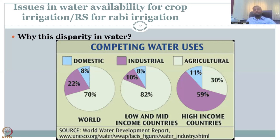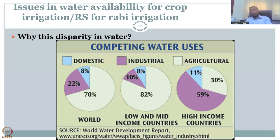In high-income countries, there is more profit in dollars per litre of water, whereas in developing nations — such as Nepal, Sri Lanka, and India — a lot of water goes into agriculture. There is a disparity, and more pressure is placed on low and middle income countries to feed the world.